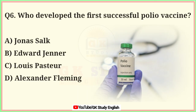Question number 6. Who developed the first successful polio vaccine? A. Jonas Salk. B. Edward Jenner. C. Louis Pasteur. D. Alexander Fleming. Correct answer is option A. Jonas Salk.